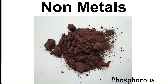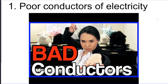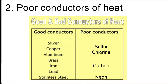Now for the non-metals, they're going to be pretty much the opposite of what we just said. They are bad conductors of electricity, and this is actually a good quality because we use them as insulators — we protect ourselves from electricity, like maybe rubber around a wire. They are poor conductors of heat, which means, again, this is good because we can take a piece of cardboard or something like that and put it around our hot coffee to keep our hand from burning.